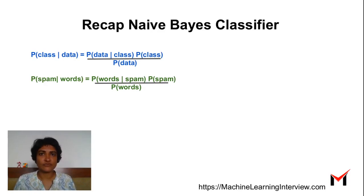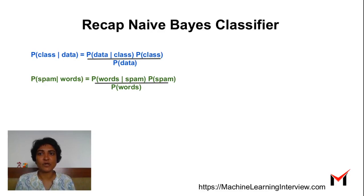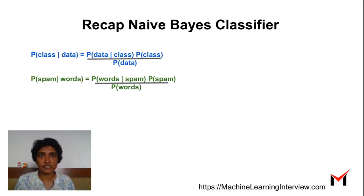Let's say you have a bunch of classes and given a new data point you want to figure out what class it belongs to. You can use the Bayes rule and write: probability of the class given the data point equals probability of the data given the class, times probability of the class, divided by probability of the data. This just follows from the basic conditional independence expansion, or the Bayes theorem.